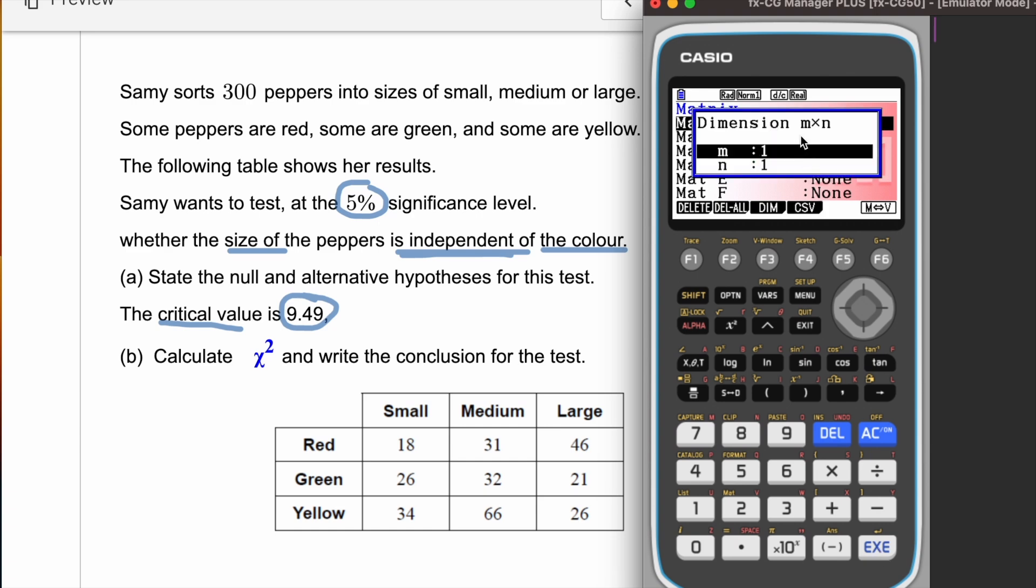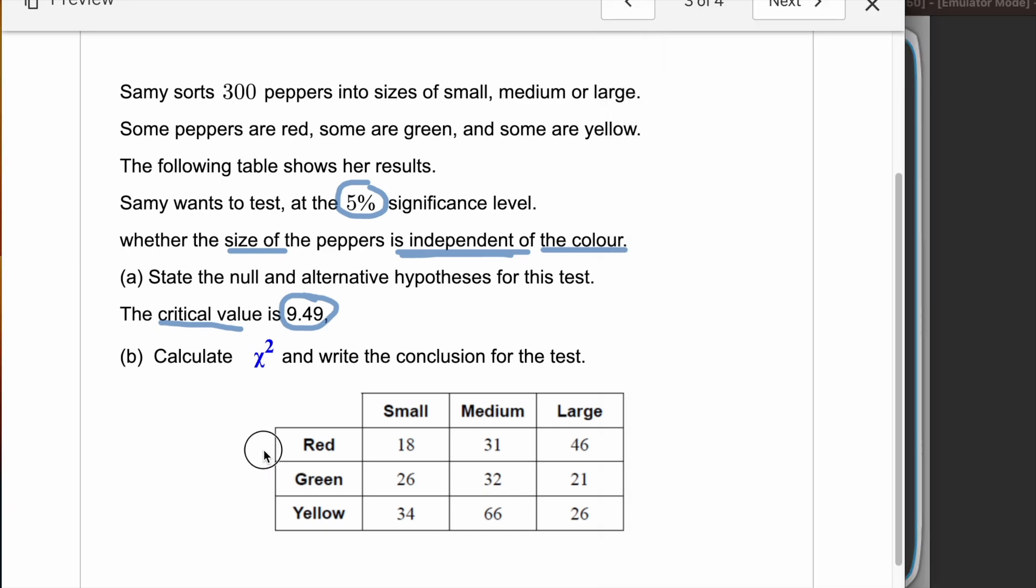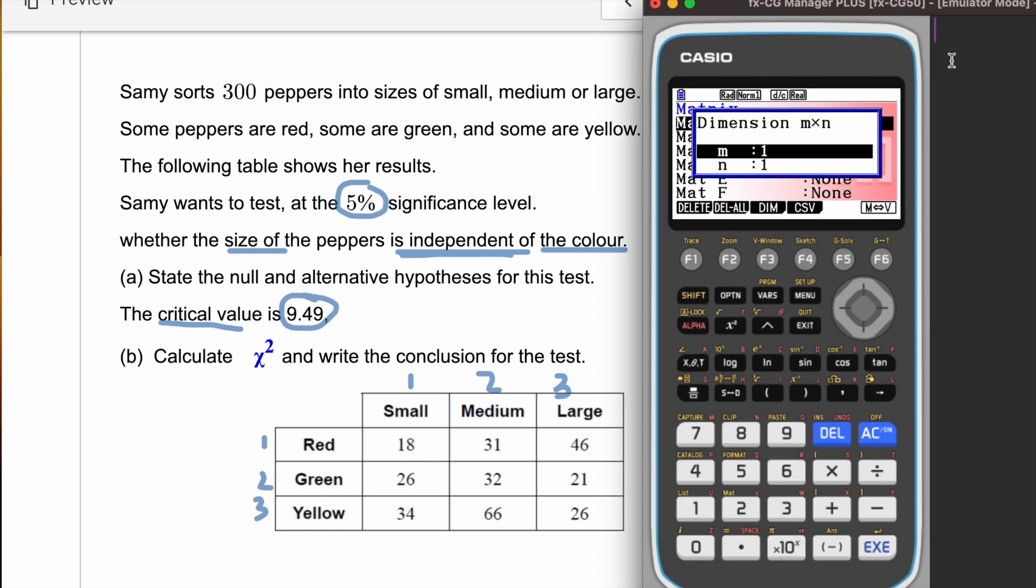It is going to ask you dimensions m and n. M is number of rows, so if you see: one, two, and three rows, and then three columns. We have a three by three matrix, so I'm going to use 3 and 3 here. Once you click enter, you will have a template in the form of a table.